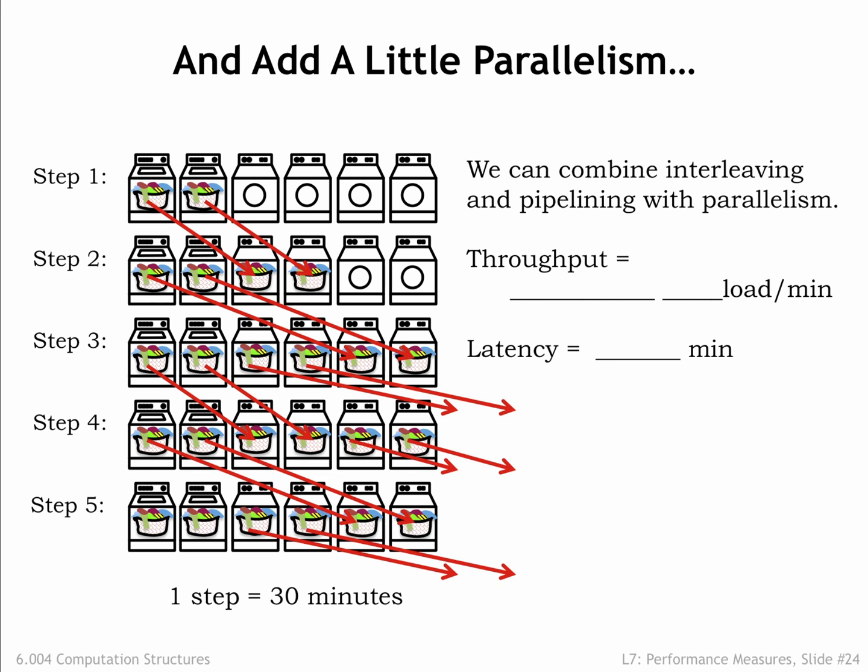By running pipeline systems in parallel, we can continue to increase the throughput. Here we show a laundry with 2 washers and 4 dryers, essentially just 2 copies of the 1 washer 2 dryer system shown earlier. The operation is as described before, except that at each step the system produces and consumes 2 loads of laundry. So the throughput is 2 loads every 30 minutes, for an effective rate of 1 load every 15 minutes. The latency for a load hasn't changed, it's still 90 minutes per load.